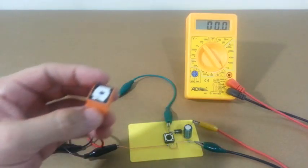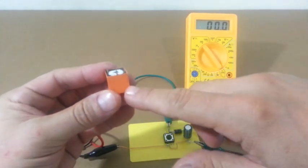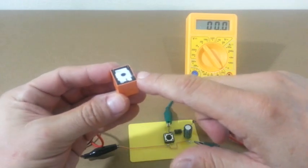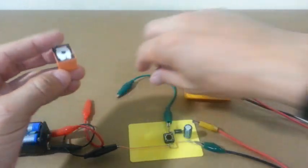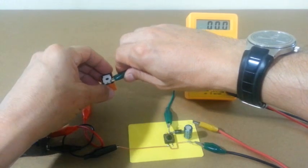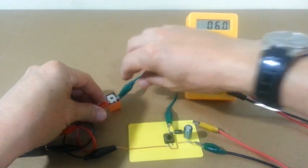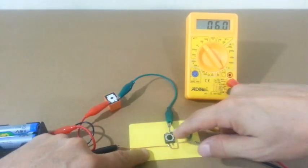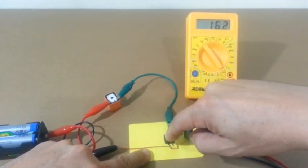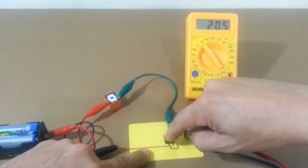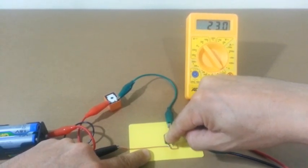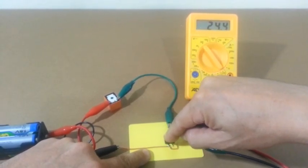For example, we can use as inductor the coil of a relay. In this relay, these two points are the coil. And let's connect to our circuit to see if it works. We can see how the voltage goes up to some 25V.